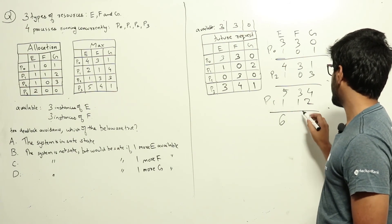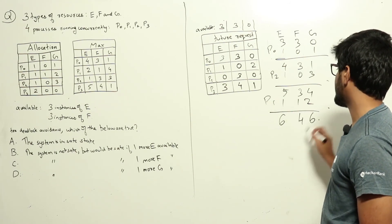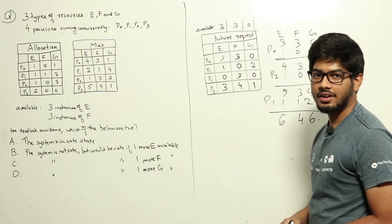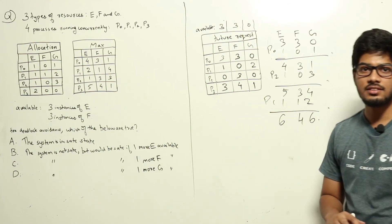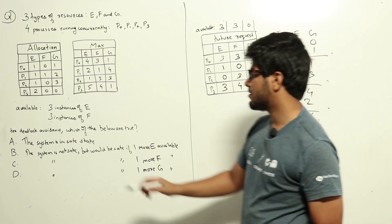Now we will have six, four, and six resources of each type. Clearly P3 can also be run. P3 will run and also release its resources. This means the system is in safe state. There is no deadlock.